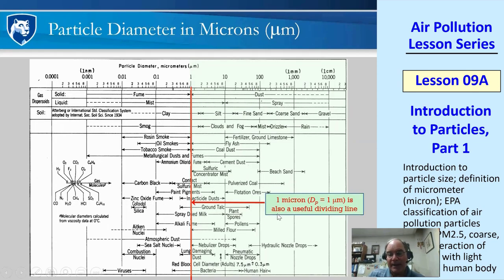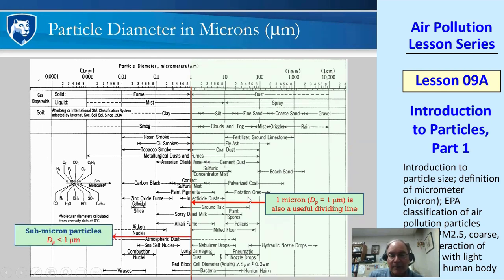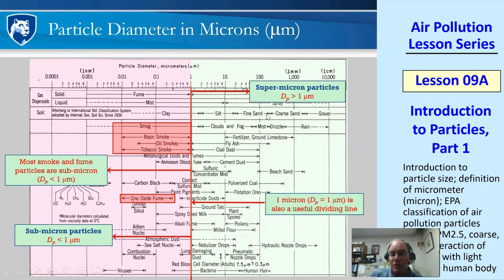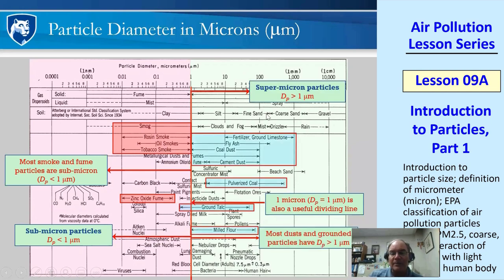Using one micron as a dividing line in the middle of the chart: submicron particles — less than one micron — are associated with combustion, including resins, rosin smoke, oil smokes, tobacco smokes, and zinc oxide fumes. Supermicron particles — bigger than a micron — are things that are mechanically ground down, such as coal dust, cement dust, pulverized coal, and milled flour.